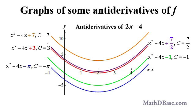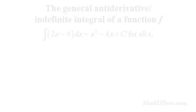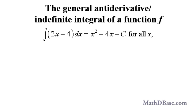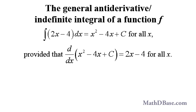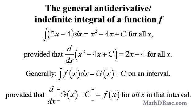Below are the graphs of five members of the family of antiderivatives of 2x minus 4, where c is equal to 3, negative 1, 7, negative pi, and 7 over 2. The general antiderivative of 2x minus 4 is x squared minus 4x plus an arbitrary constant for all x, provided that the derivative of that general antiderivative is equal to 2x minus 4 for all x. The general antiderivative of a function on an interval is called the indefinite integral of the function on that interval, and is written using an elongated s called an integral symbol.